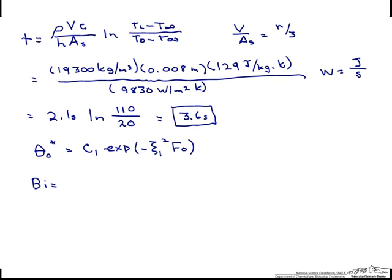But here, the Biot number is based on r rather than r over 3. And so that's calculated to be 0.77.